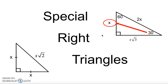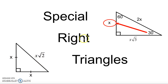Hey everyone, this is Mr. A. I want to take a look at special right triangles with you today. There are two kinds of triangles that fall into this category: the isosceles right triangle and the 30-60-90 triangle. There are some nice patterns that all of these triangles follow, and they can save you a lot of work sometimes. Let's jump right in with the isosceles right triangle.